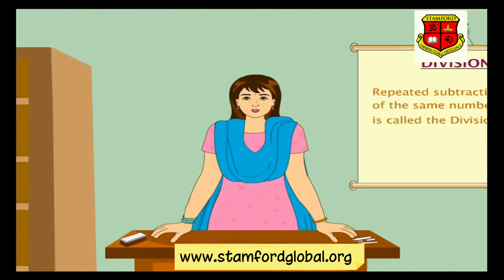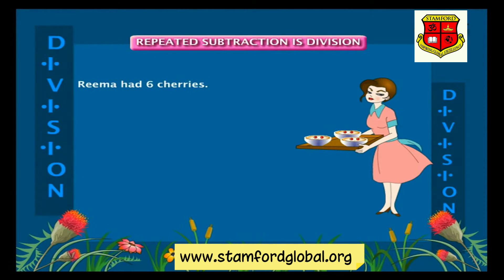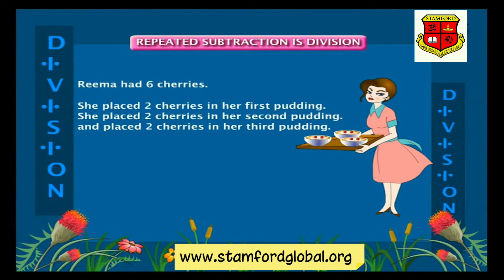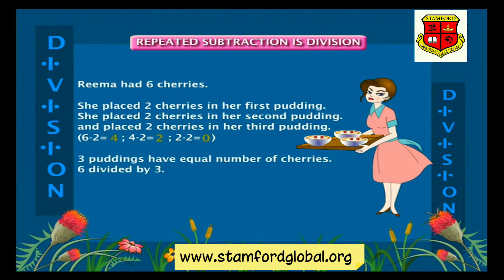Repeated subtraction of the same number is called division. Let us understand division through an example. Rima had six cherries. She placed two cherries in her first pudding, two in her second, and two in her third. Six minus two is four, four minus two is two, two minus two is zero. Three puddings have an equal number of cherries.